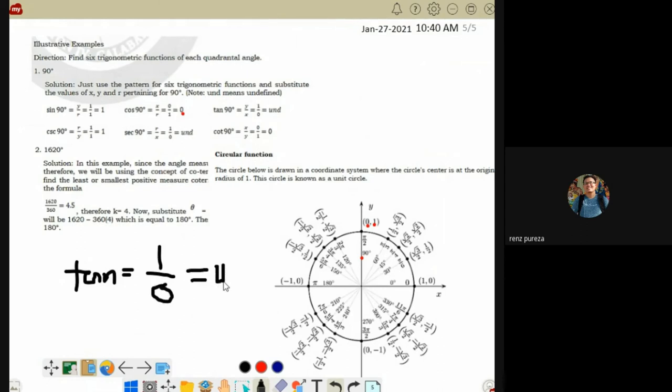So we abbreviate it as UND. Short for undefined. So now, it's undefined. That means the tangent of 90 is undefined. Next, how about the cosecant? How do we compute cosecant? We compute cosecant because 1 has a reciprocal. What's the reciprocal of 1?